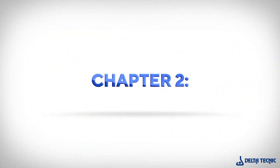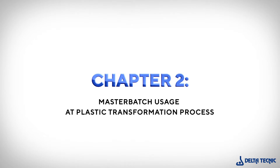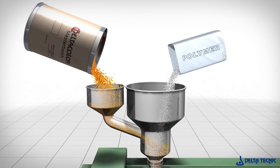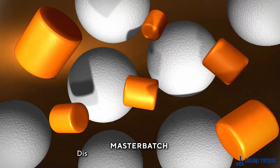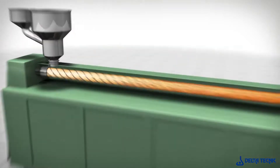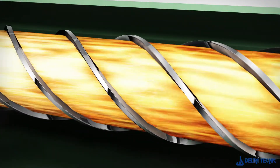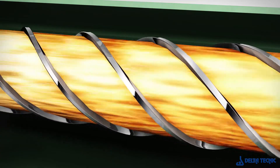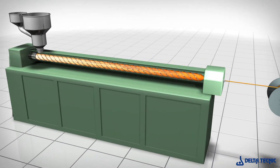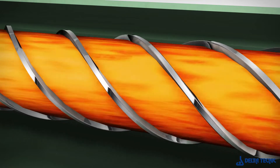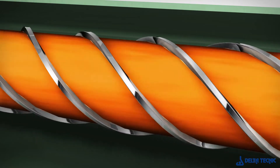Chapter 2: Master Batch Usage at Plastic Transformation Process. During the plastic transformation process, a percentage of master batch will be added to the base polymer or compound, starting the process of diluting it. Dilution occurs due to temperature, speed and mechanical stress within the extruder during the plastic transformation process. Use of the appropriate master batch enables excellent incorporation and dilution while in the extruder, giving outstanding color homogenization in the final manufactured product.